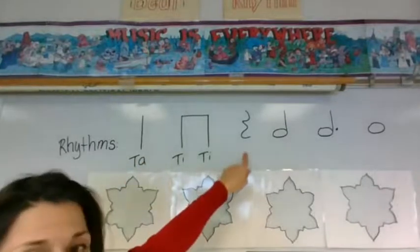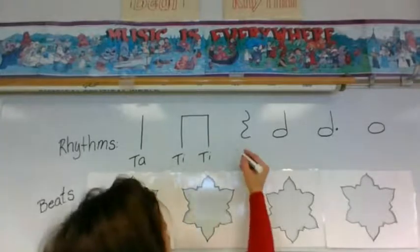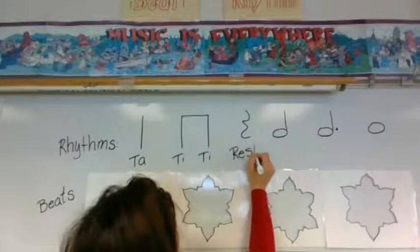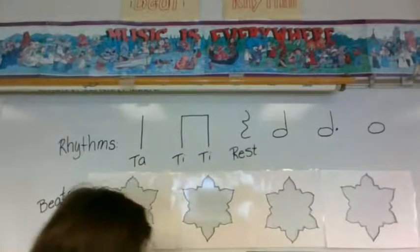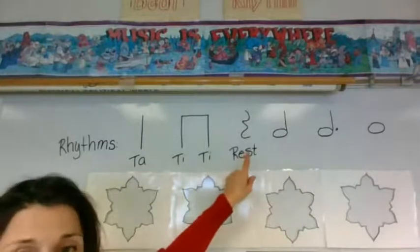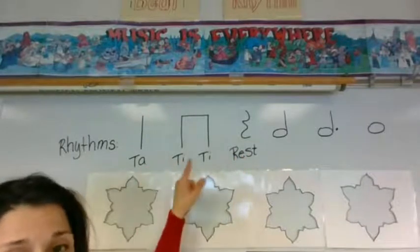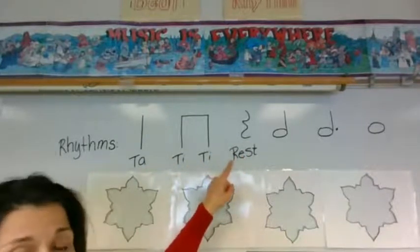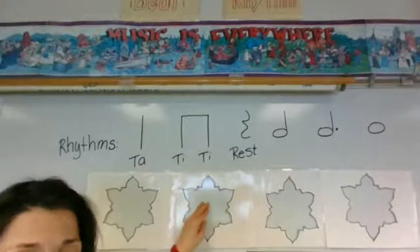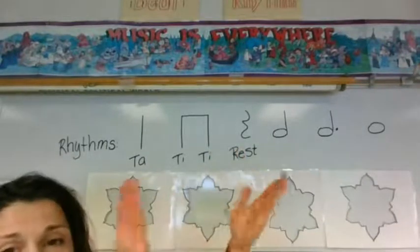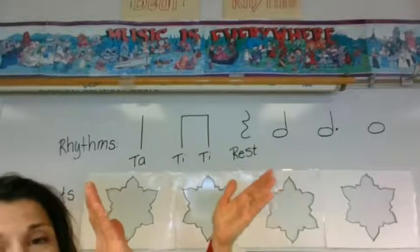What about this third rhythm? Rest. What is the value of rest? Just like ta and tee-tee, it's a one beater. It only takes up one snowflake. When we see rest, we hold our hands out to the side and say rest.